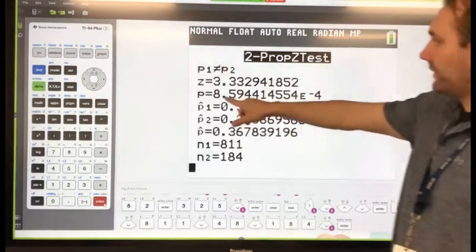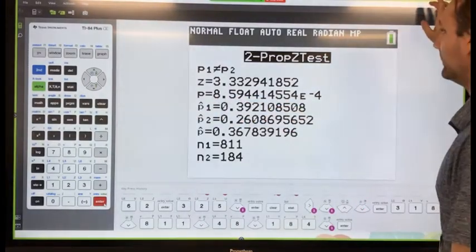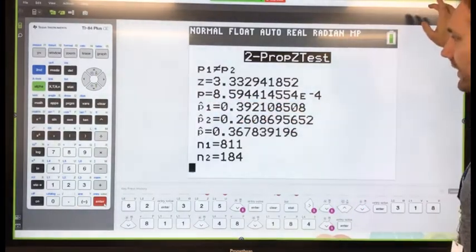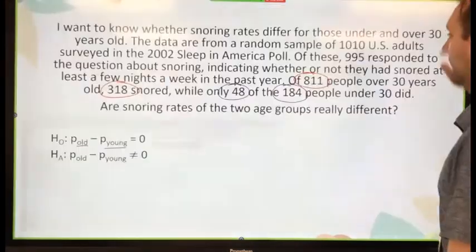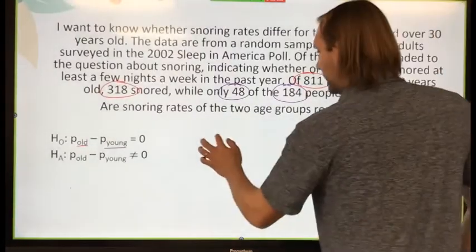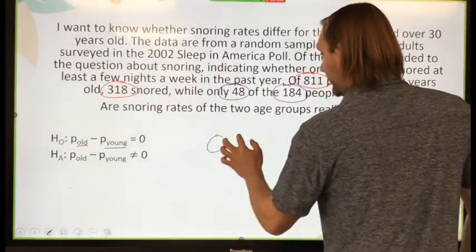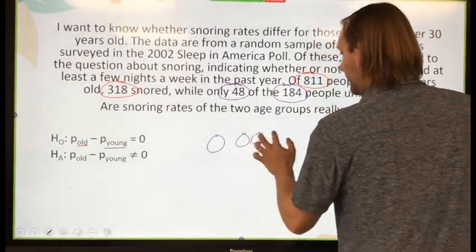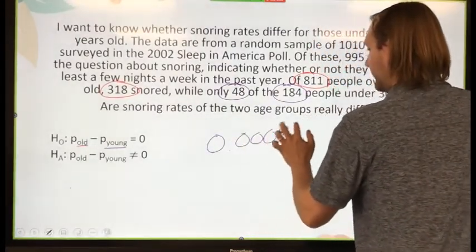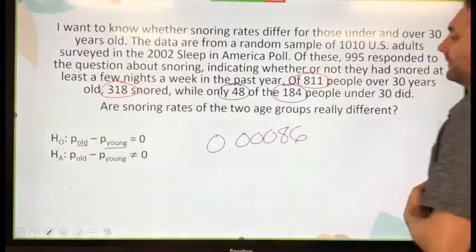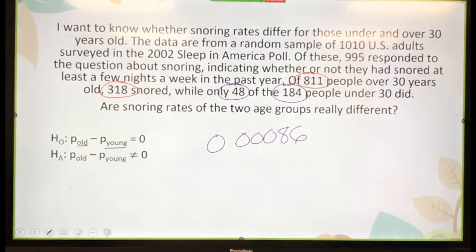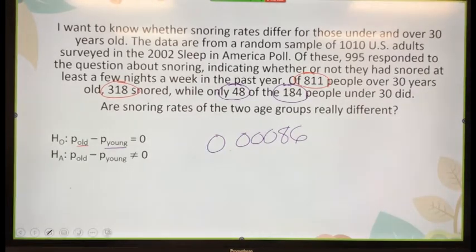So that's basically three zeros in front — we'll call that about 0.00086. Do you think that's a very, very small p-score?